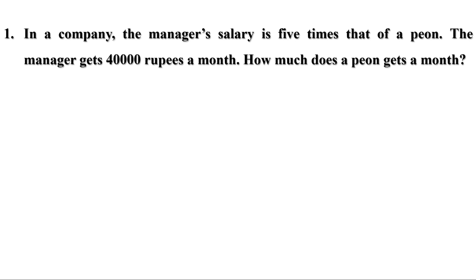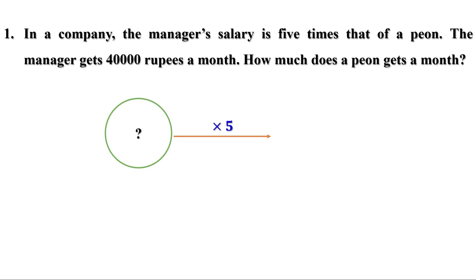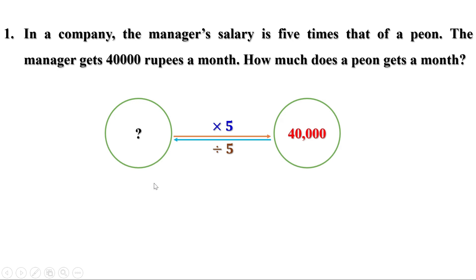Now let us do the problems on page 35. First problem: In a company, the manager's salary is 5 times that of a peon. The manager gets 40,000 rupees a month. How much does a peon get a month? When the peon's salary is multiplied by 5, we get the manager's salary of 40,000. We need the peon's salary before multiplication by 5, so do the reverse: divide 40,000 by 5. The salary of the peon is 8,000 rupees.